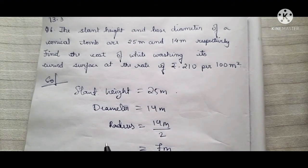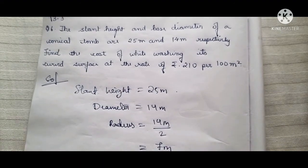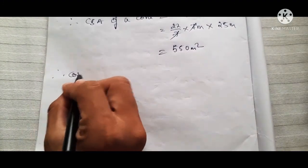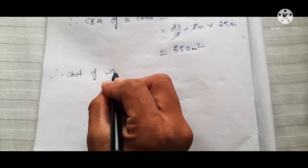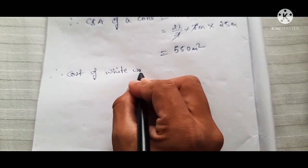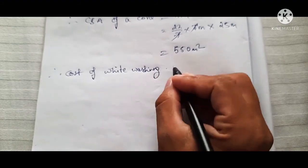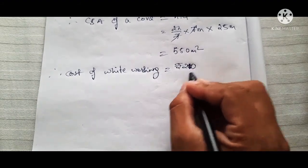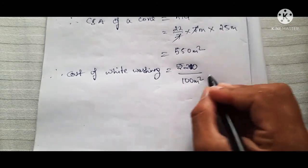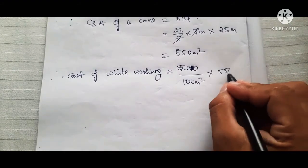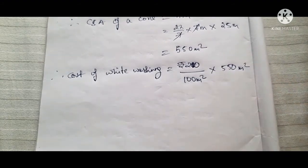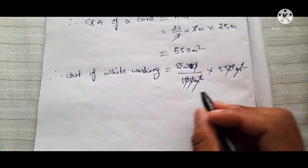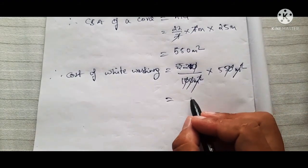Now we are going to find the cost of whitewashing its curved surface at the rate of rupees 210 per 100 meters square. Therefore, cost of whitewashing = (210 / 100) × 550. The meter square units cancel, and cancelling the zeros gives us 21 times 55, which equals rupees 1155.